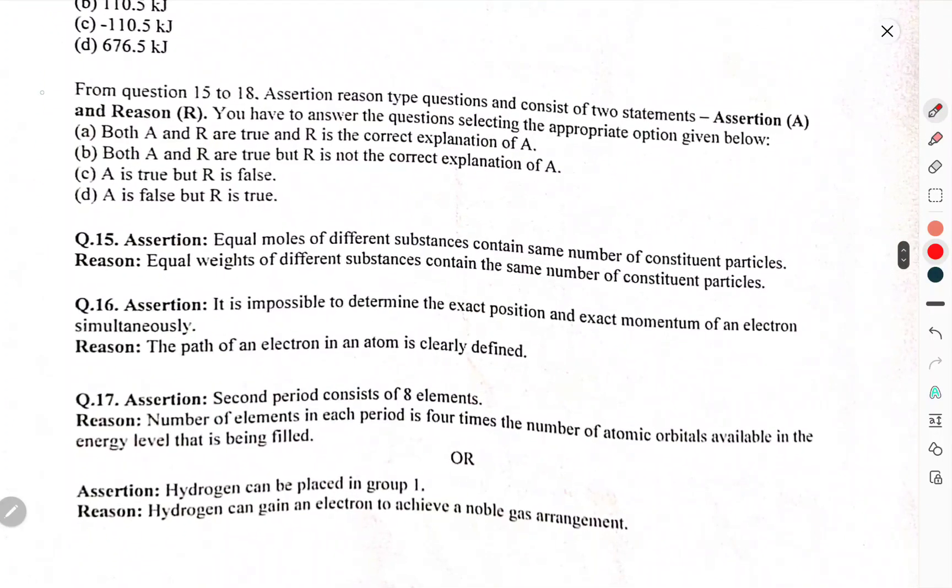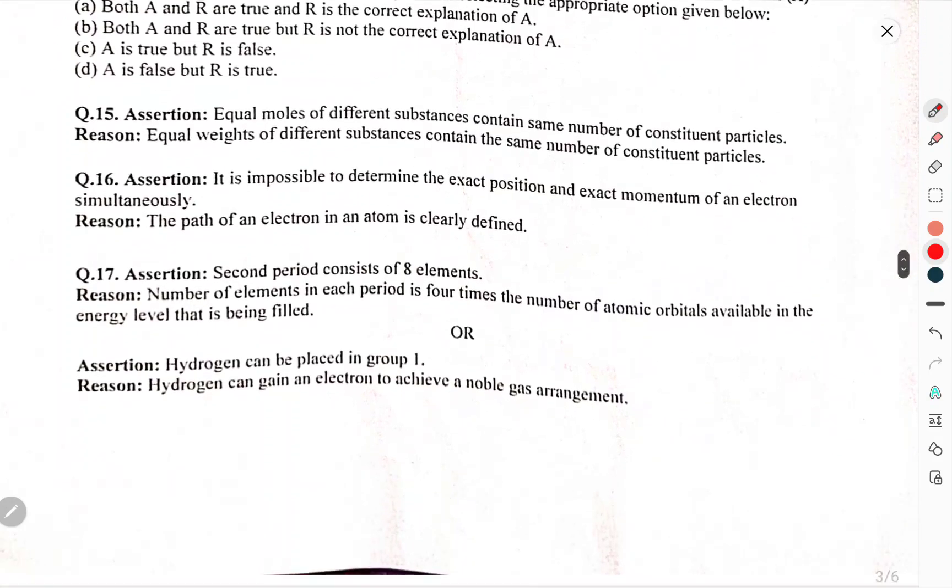Question number 15 to 18: Assertion-reason type questions consisting of two statements - Assertion and Reason. You have to answer the question selecting the appropriate option given below. Assertion: Equal moles of different substances contain the same number of constituent particles. Reason: Equal weights of different substances contain the same number of constituent particles. Assertion: It is impossible to determine the exact position and exact momentum of an electron simultaneously. Reason: The path of an electron in its atom is clearly defined.